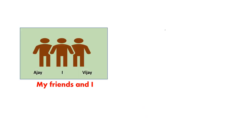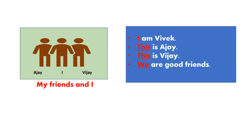Now Vivek is talking about his friends. This is Ajay and this is Vijay. They are my friends. The person who is speaking is saying: I am Vivek, and he is introducing his two friends. We are good friends. So these words — I, this, and we — are referring to different people. I refers to Vivek, this refers to Ajay, this refers to Vijay, we refers to Ajay and Vijay. These are words used in place of names — that is what we call pronouns.